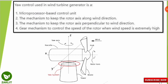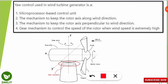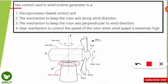The next question from the 2020 NET examination asks: the yaw control used in a wind turbine generator is — a picture is already on your screen to help you answer. Take a few seconds to think about it.